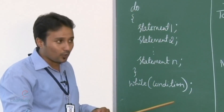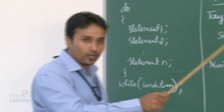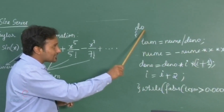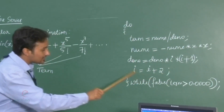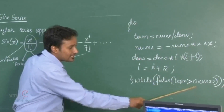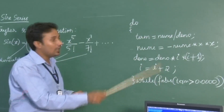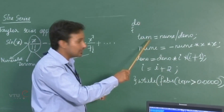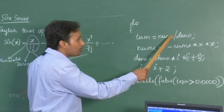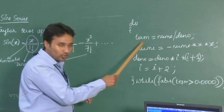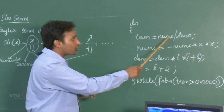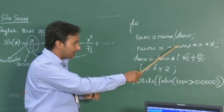In our program we have the code to look into the same. This part is known as the do part, while the condition is checked at the last. How exactly does it work? The first line is term equals numerator by denominator — as discussed, each and every term is a combination of numerator by denominator.